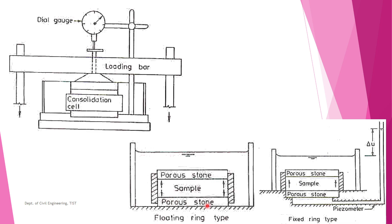In the floating ring type, both porous stones can move: the bottom porous stone can move upwards and the top porous stone can move downwards as consolidation occurs. In the fixed ring type, the bottom porous stone cannot move; water can only exit through the upper porous stone, and the upper porous stone moves down during consolidation.